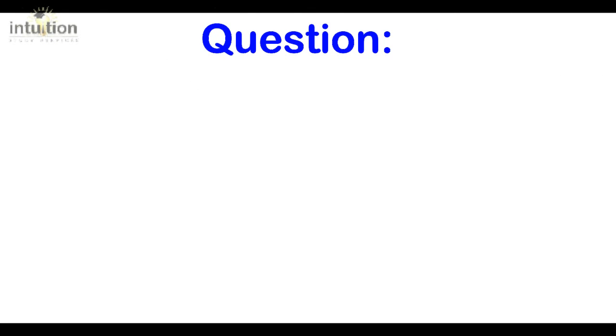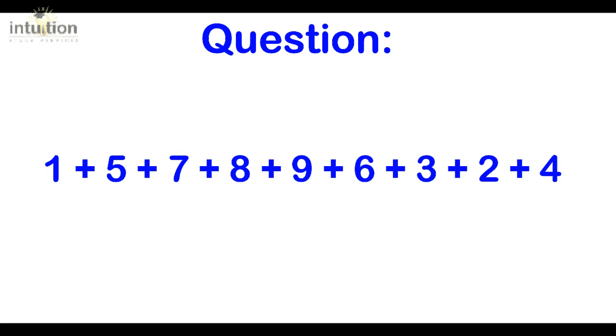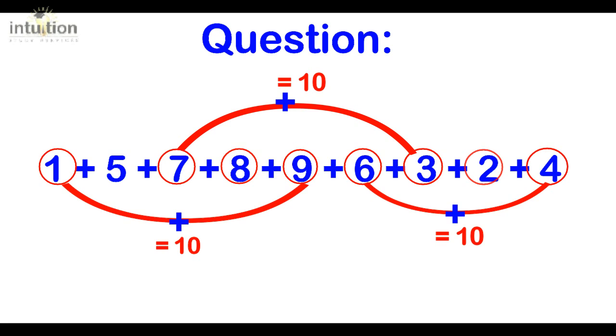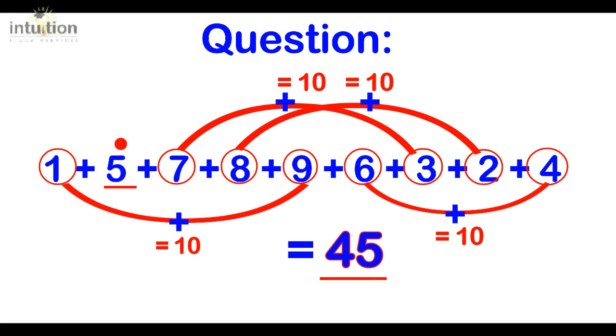So let's go back to the question that we had in the beginning. If we see now, we look for the complements. So we've got 10, 20, 30, 40, 45. And that's how easy it is.